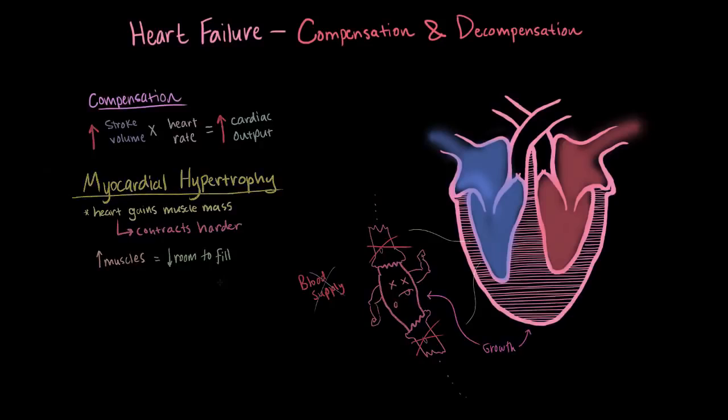So those were the three modes of compensation. You can activate your sympathetic nervous system, you can increase your preload, or you can gain muscle, which is called myocardial hypertrophy. And so for each of these, our goal is to increase cardiac output by either heart rate or stroke volume.